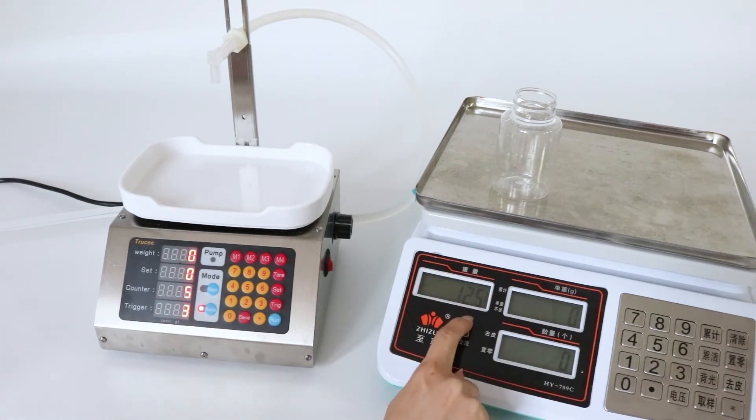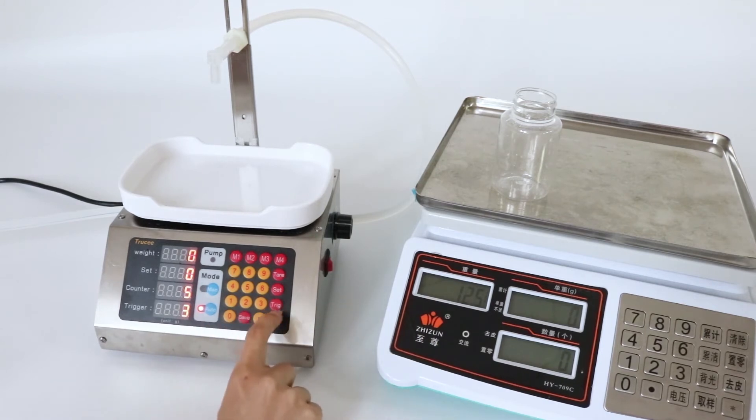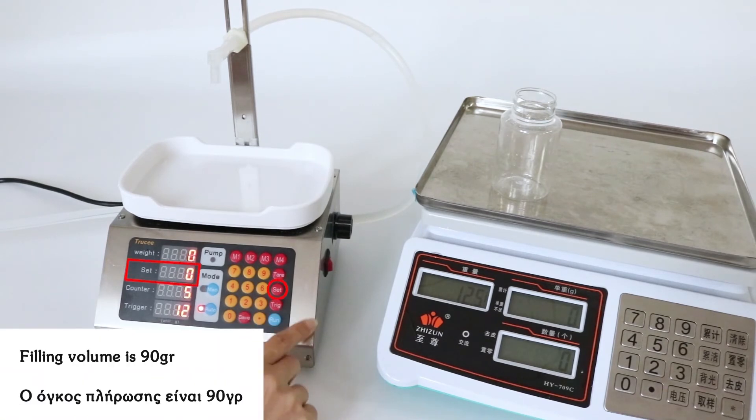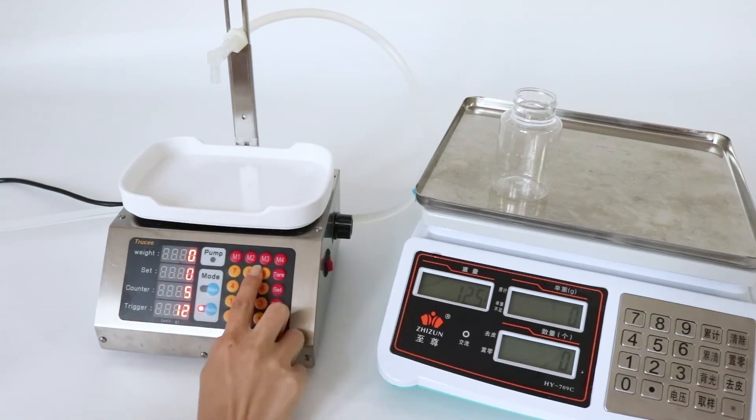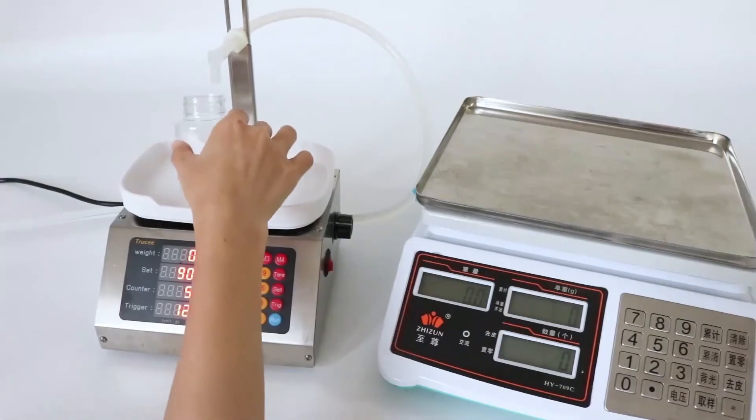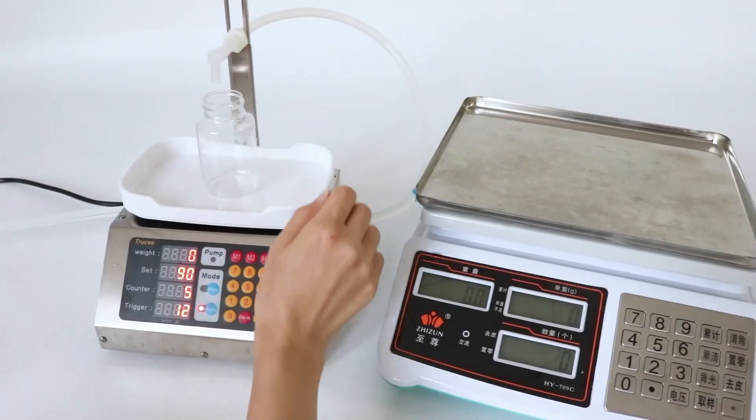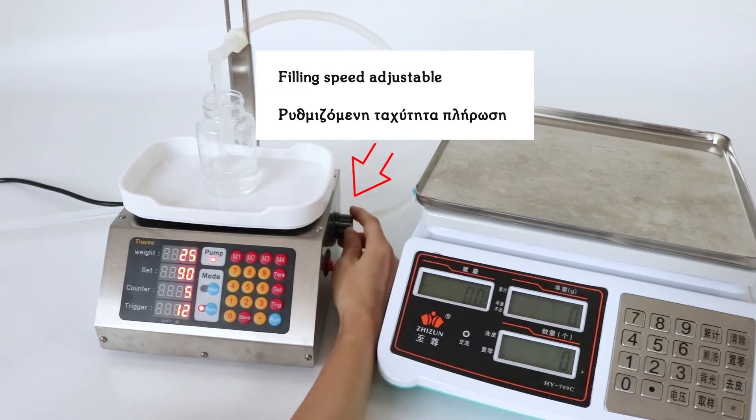Bottom weight is 12.5 grams. The target weight needs to be set to 12. The filling mode, let's set it to 90. Speed can be adjusted, you can adjust it fast.